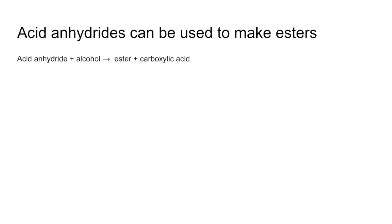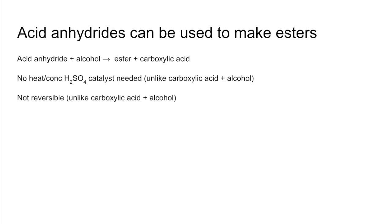So when you take an acid anhydride and alcohol you make an ester and a carboxylic acid. So that's different to the classic esterification reaction between a carboxylic acid and alcohol. You don't need any heat for this one and you don't need the concentrated sulfuric acid catalyst. And another difference is it's not reversible.